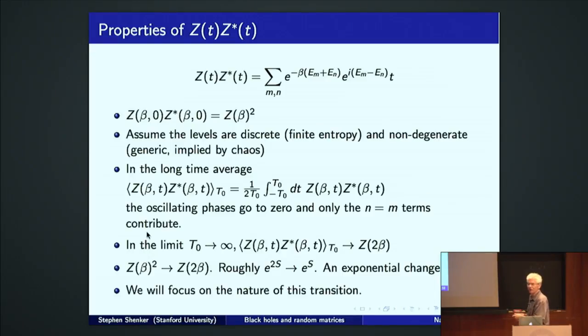we can imagine taking a long time average of this quantity, integrating it over a long time interval, let's say from minus capital T naught to T naught divided by that interval. And when you do this, these oscillating phases will eventually cancel out since these things are not degenerate. The only term that will survive is the m equals n term.